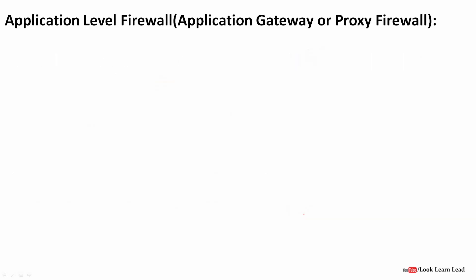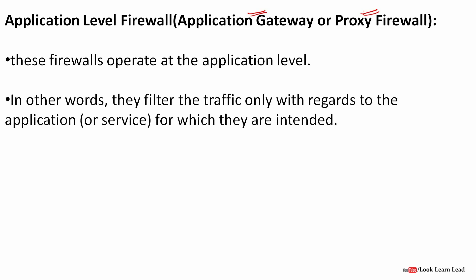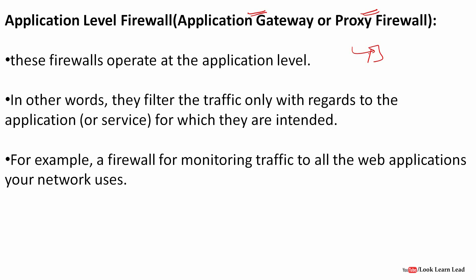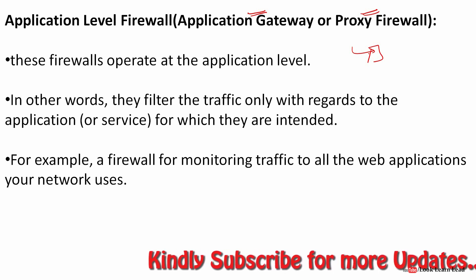The fourth type is the application level firewall, also called an application gateway or proxy firewall. It operates at the application layer and filters traffic only with regard to the specific application for which it is intended. For example, if you are using a web browser, the firewall filters only packets related to that web browser. It works for one specific application or service, not the whole system.